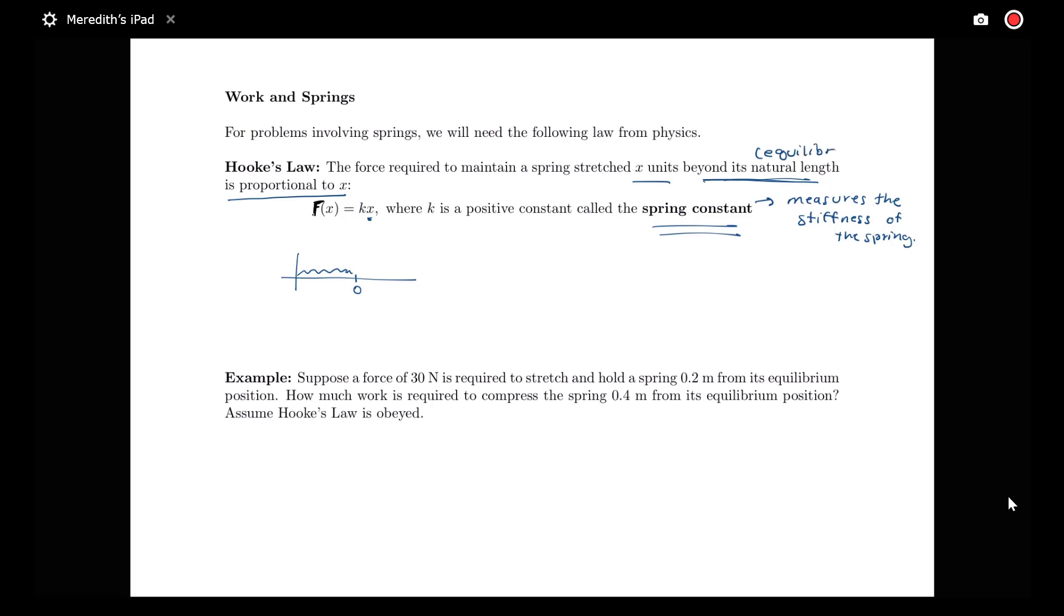So we would call that its equilibrium position. So besides saying beyond its natural length, we can say beyond its equilibrium position. So this here is what we call at equilibrium.